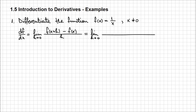So the limit when h approaches 0: in the numerator we're going to have f of x plus h which is 1 over (x plus h), minus f of x which is 1 over x, and everything over h. Now in the numerator we cannot perform that difference between fractions until they have a common denominator.